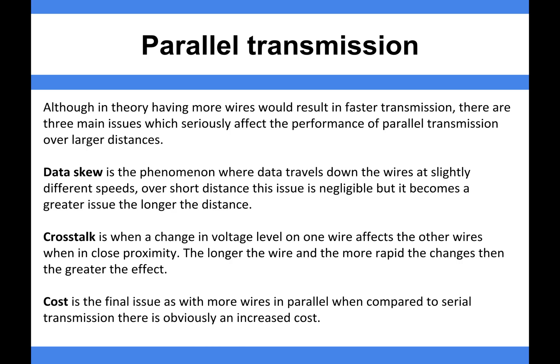Over a short distance, data skew is negligible because the difference is so small, but it becomes quite a big issue over a long distance. Essentially, you need to read these wires at the same time for it to work, and because of data skew that doesn't work very well — what you send out over a long distance isn't necessarily what gets received, purely down to the slightly different speeds at which the data travels. The other issue is crosstalk, where changes in voltage level on one wire can affect another wire in close proximity. The longer the wire and the more rapid the changes, the greater the effect — electrical signals on one wire can interfere with signals on the wire next to it, which over short distances can be managed, but over long distances becomes a big issue.